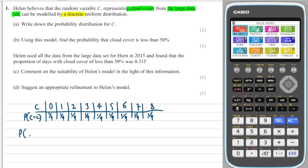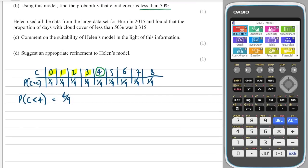So if there are nine possibilities and it's a uniform distribution, each probability is one ninth. The probability that cloud cover is less than 50% means less than four — which is the median. There are four possibilities: 0, 1, 2, 3. So the probability is four out of nine. Helen used all the data from the large data set for Hurn in 2015 and found that the proportion of days with cloud cover less than 50% was 0.315.